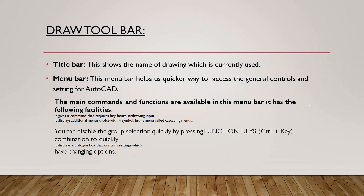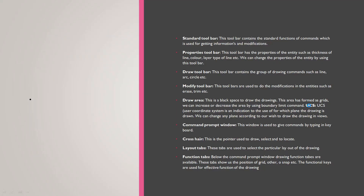If you want to disable the menu bar, you can disable it. The standard toolbar is a normal toolbar for standard operations. The property toolbar includes line, color, layer type, and line thickness settings.